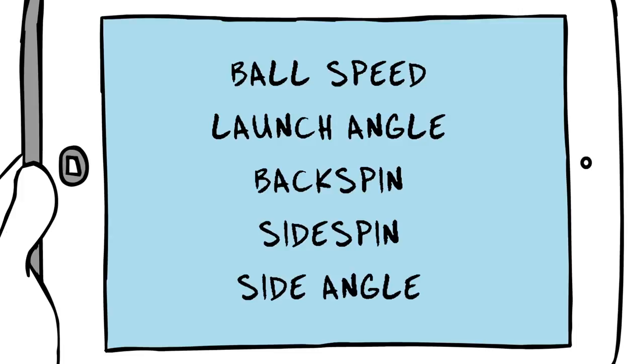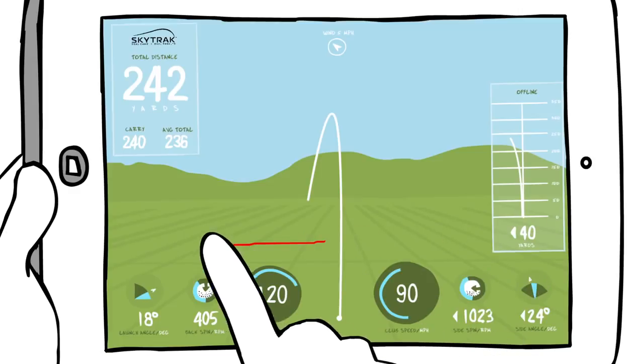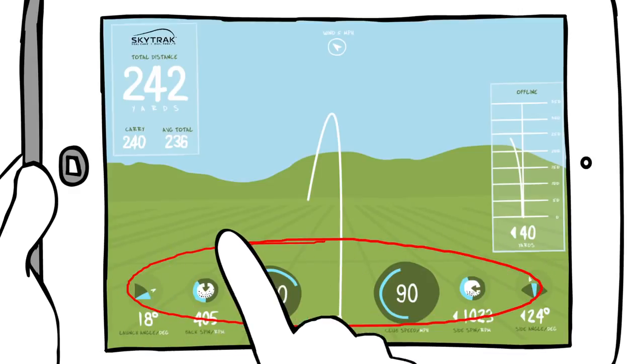By collecting this set of data, the physics of golf can be used to project the actual ball flight. This simple concept is the foundation of how SkyTrack works.